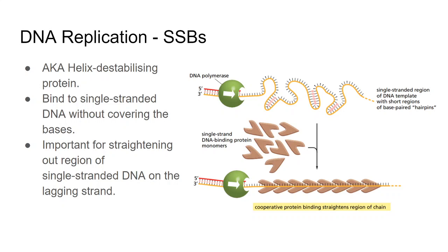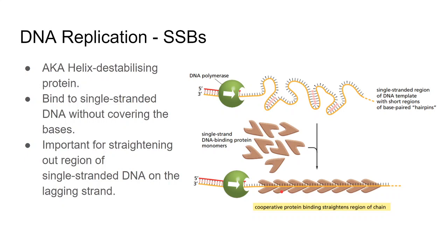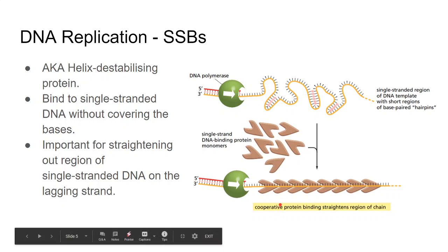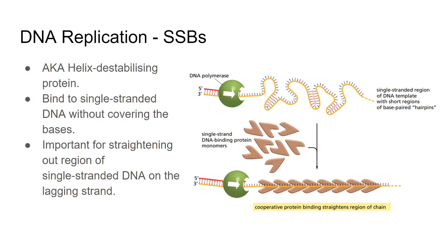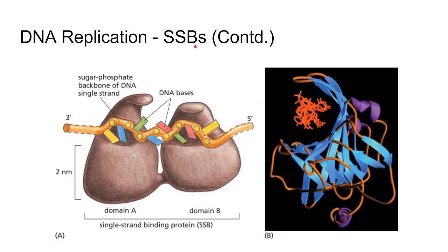The polymerase has to constantly detach and re-attach to the lagging strand; therefore when it detaches, single-stranded binding proteins keep the DNA kink-free. On the lagging strand the DNA stays single-stranded for a longer period of time, whereas the leading strand doesn't remain single-stranded for very long. I'll show a video later that will make this entire process clearer.